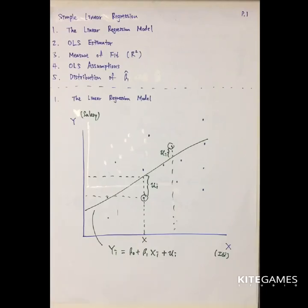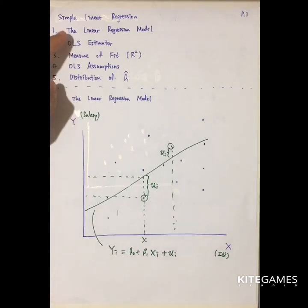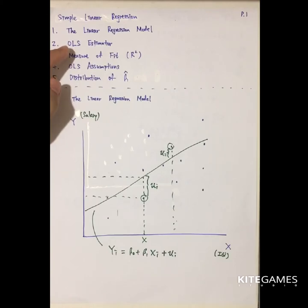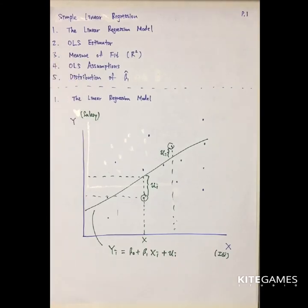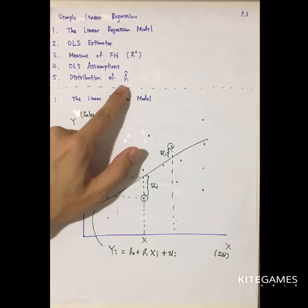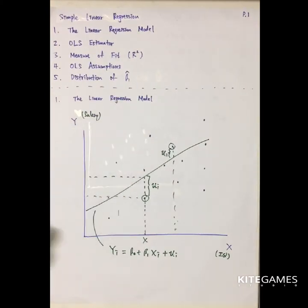In this video, we will talk about simple linear regression. We will cover five things. First is the linear regression model. Second, we will use the OLS estimator to estimate the population. Third, we are going to see the measure of fit — whether the OLS estimators are good or bad. Fourth, we will take a look at three basic OLS assumptions. Finally, we will look at the distribution of the estimator, in particular the distribution of beta 1 hat with large sample. So let's begin.